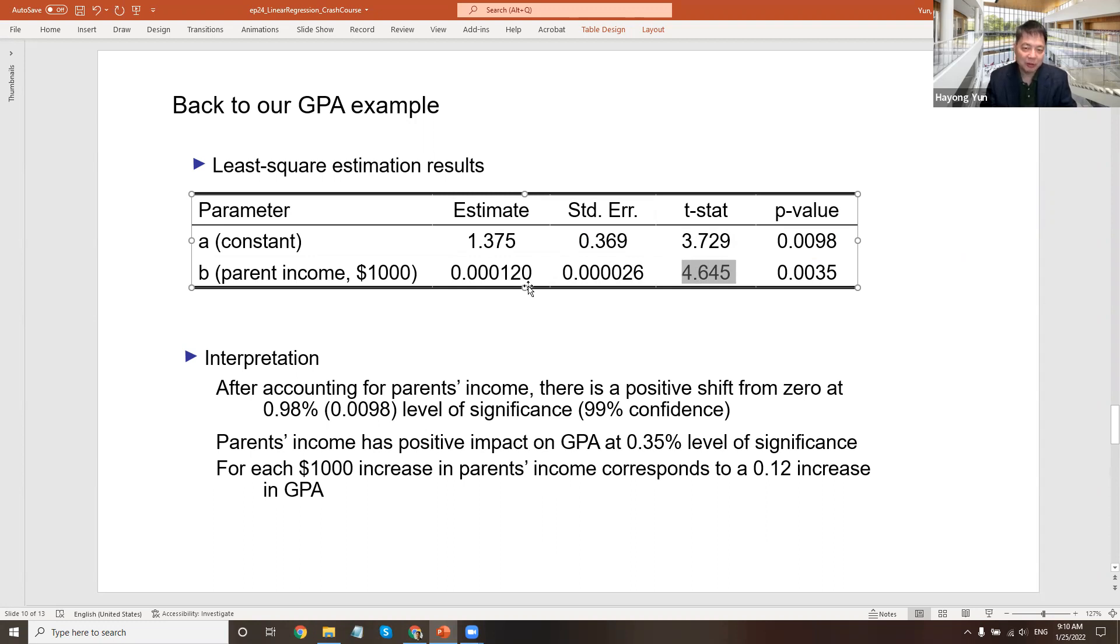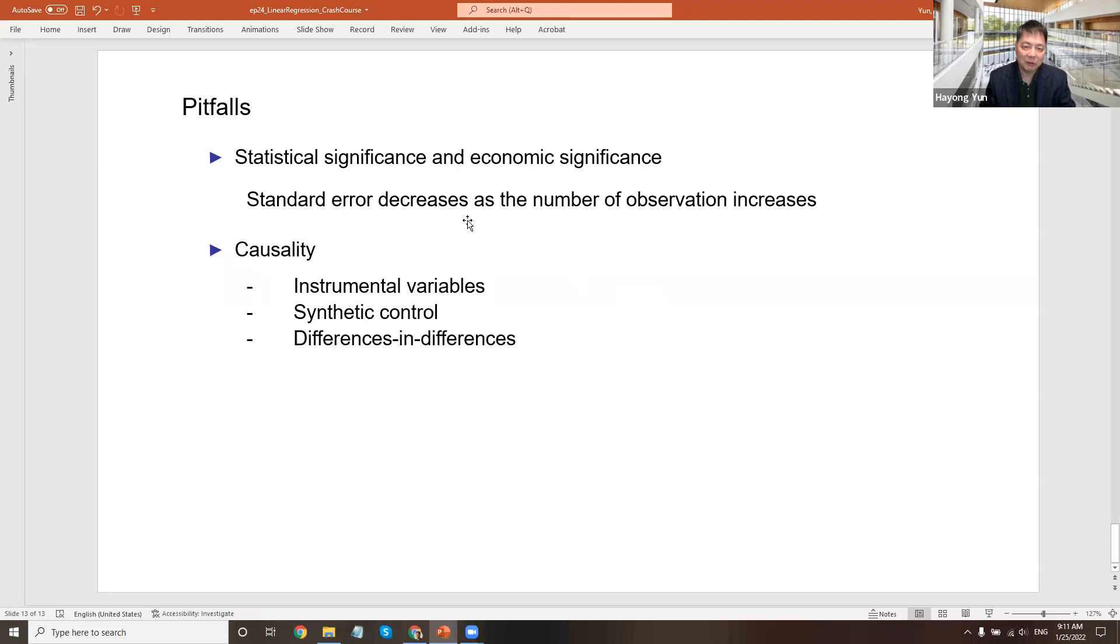But look at this number. Per thousand dollar increase, the GPA increases by 0.00012. In real life, it probably doesn't matter. In this case, what we are calling this is that statistically, it is a statistically significant estimate, but it's economically insignificant. It just doesn't mean much. So be careful and don't be too enthusiastic even when you get statistical significance, because you need to also check the economic significance.